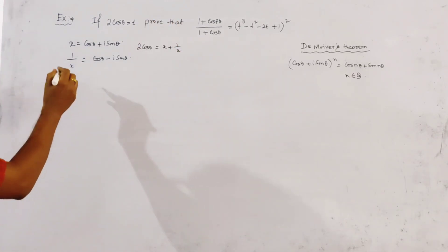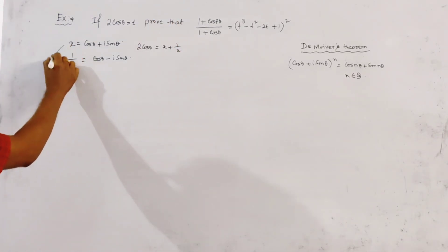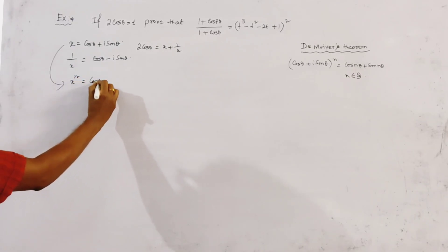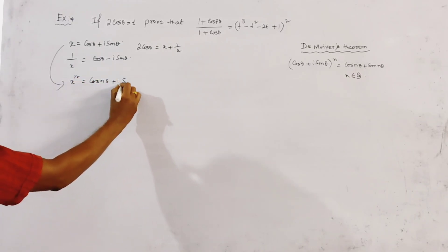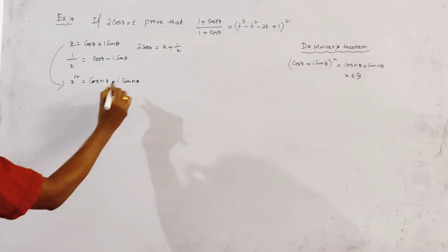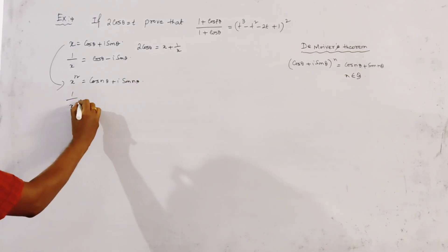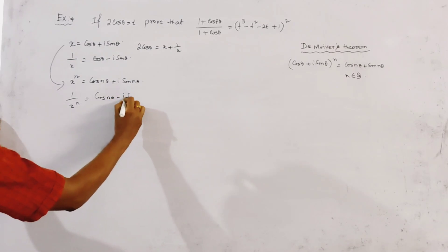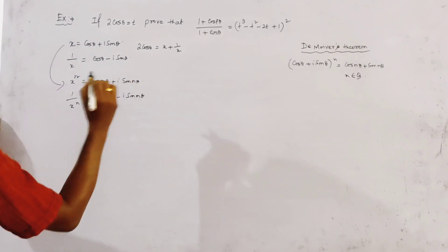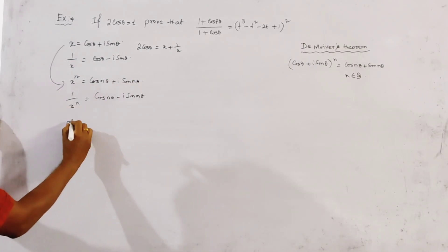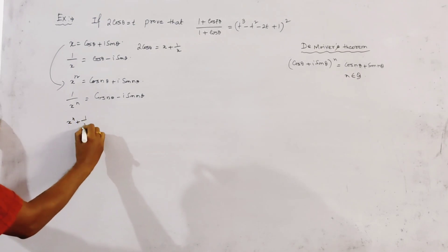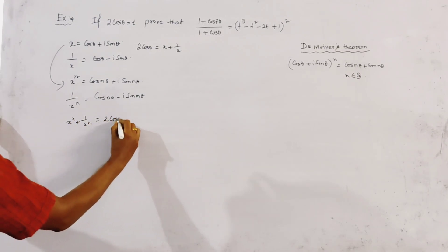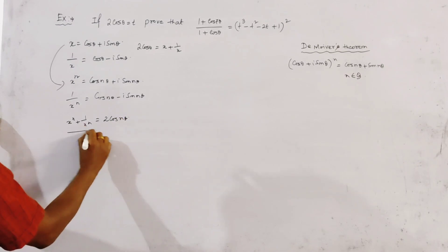Taking the nth power, we get xⁿ = cosnθ + isinnθ and 1/xⁿ = cosnθ - isinnθ. Adding these gives xⁿ + 1/xⁿ = 2cosnθ. So cosnθ = (xⁿ + 1/xⁿ)/2.